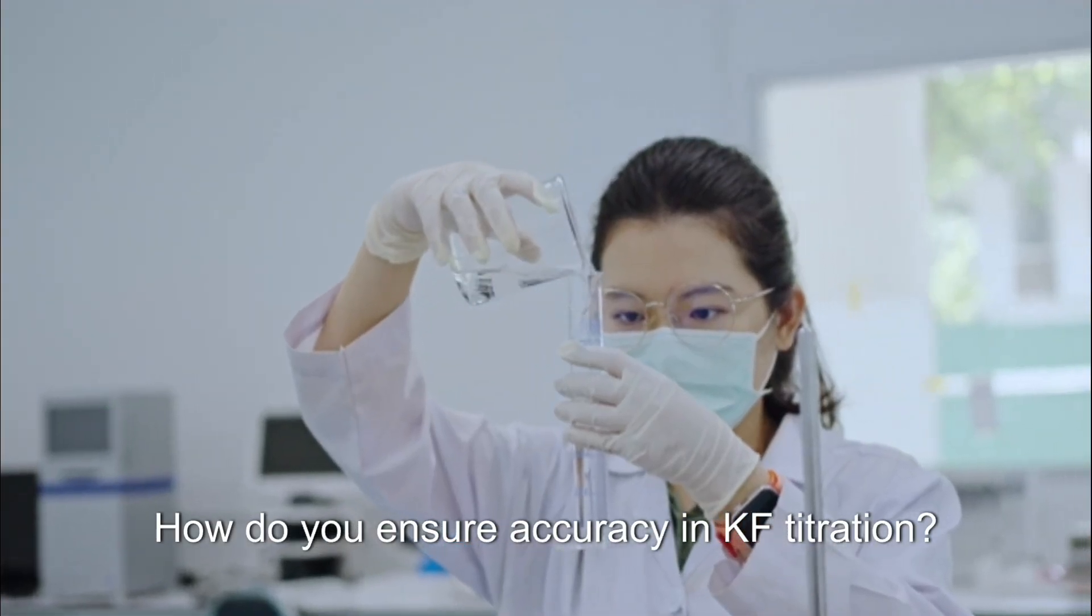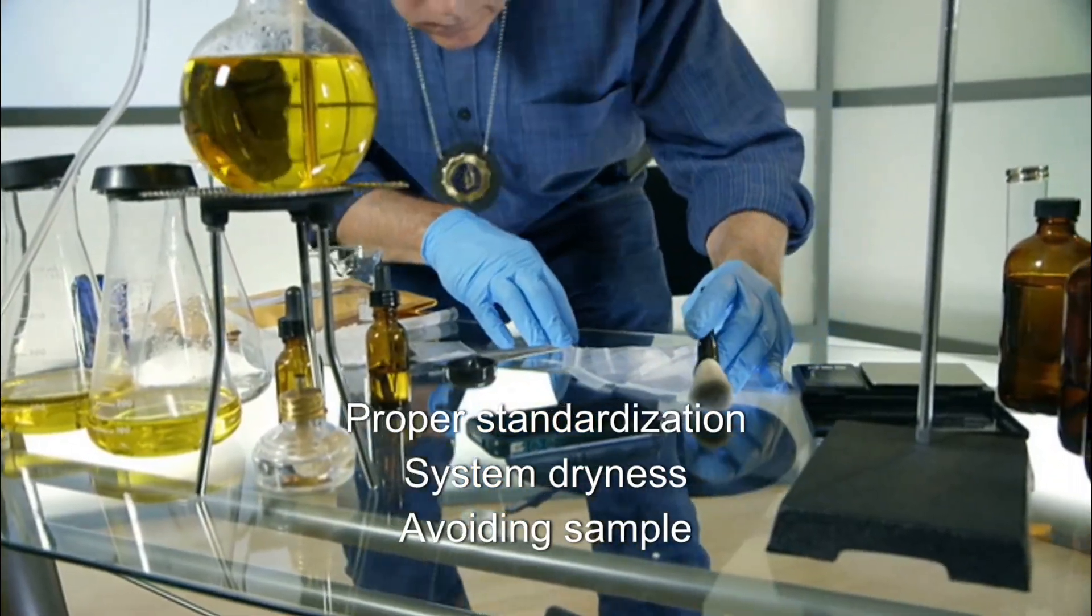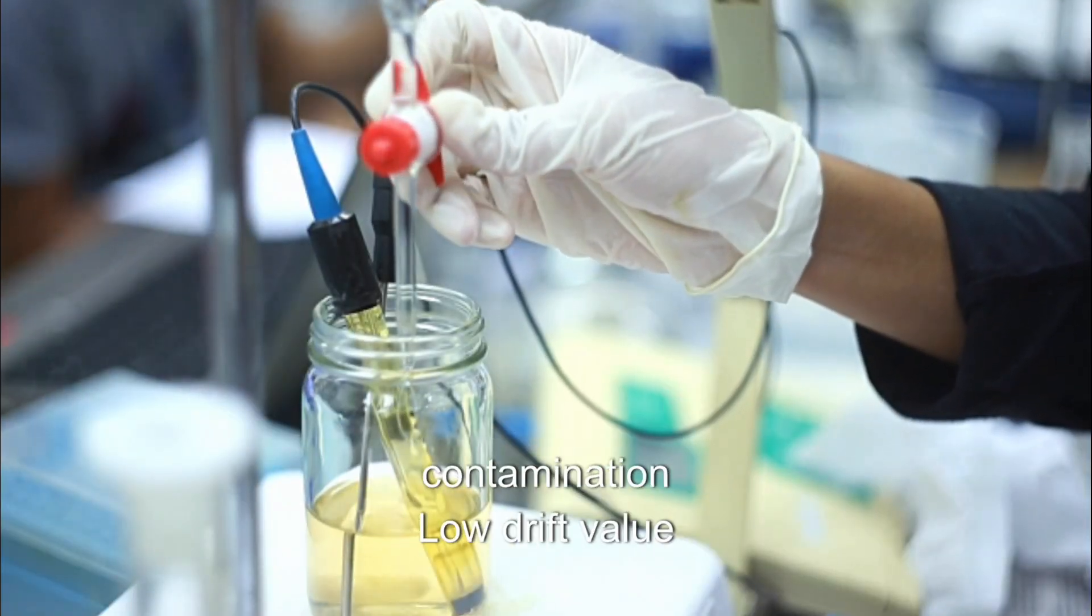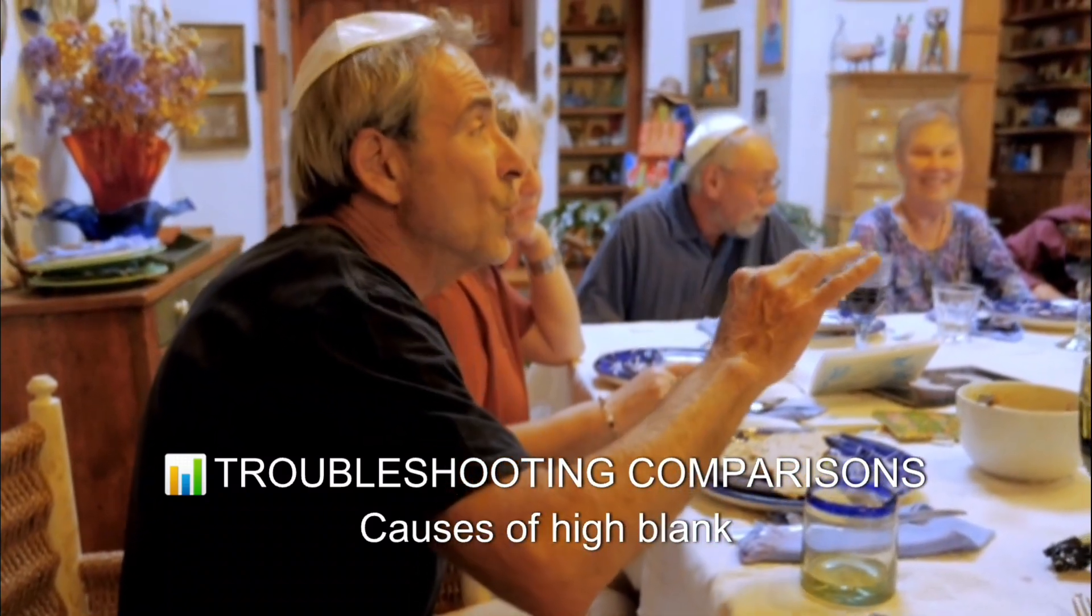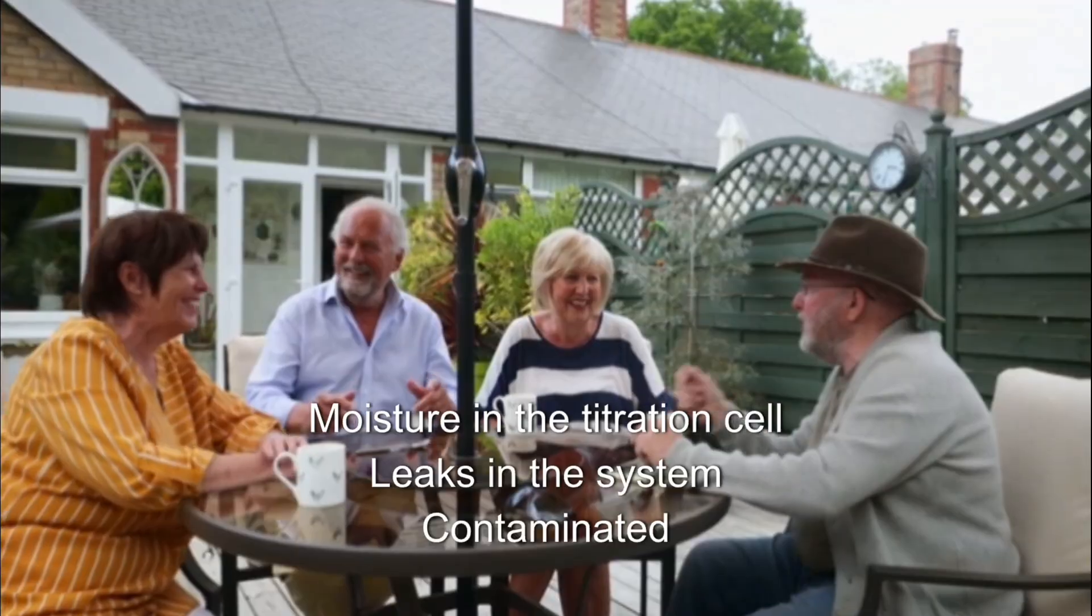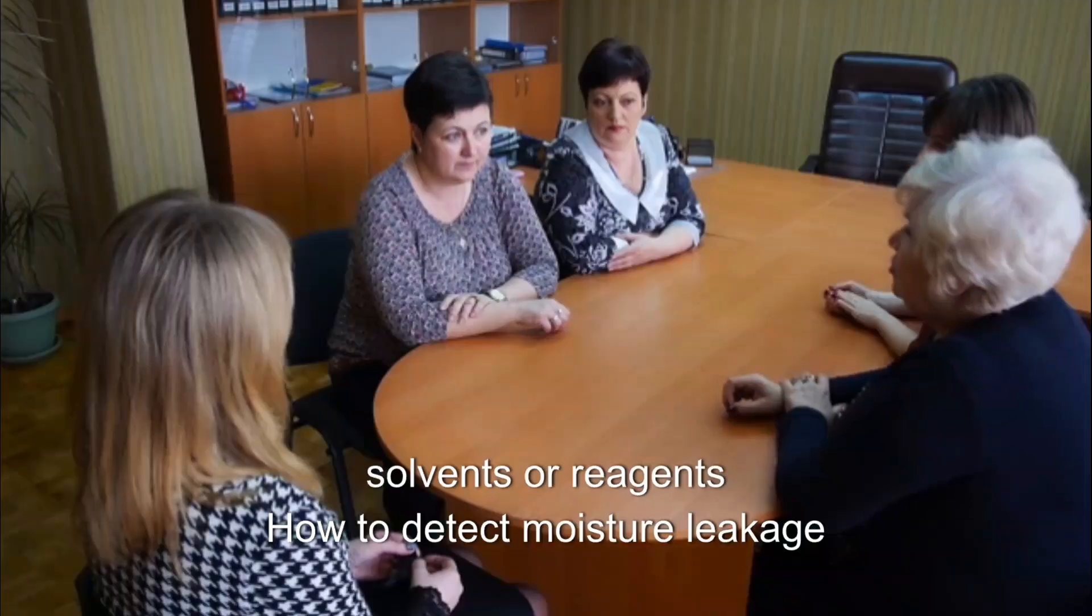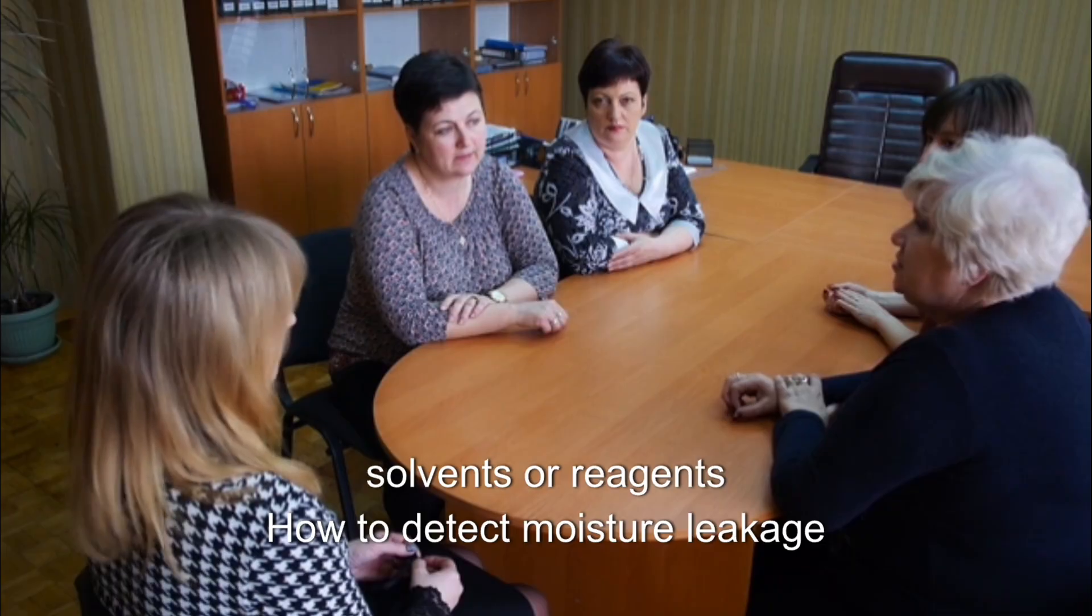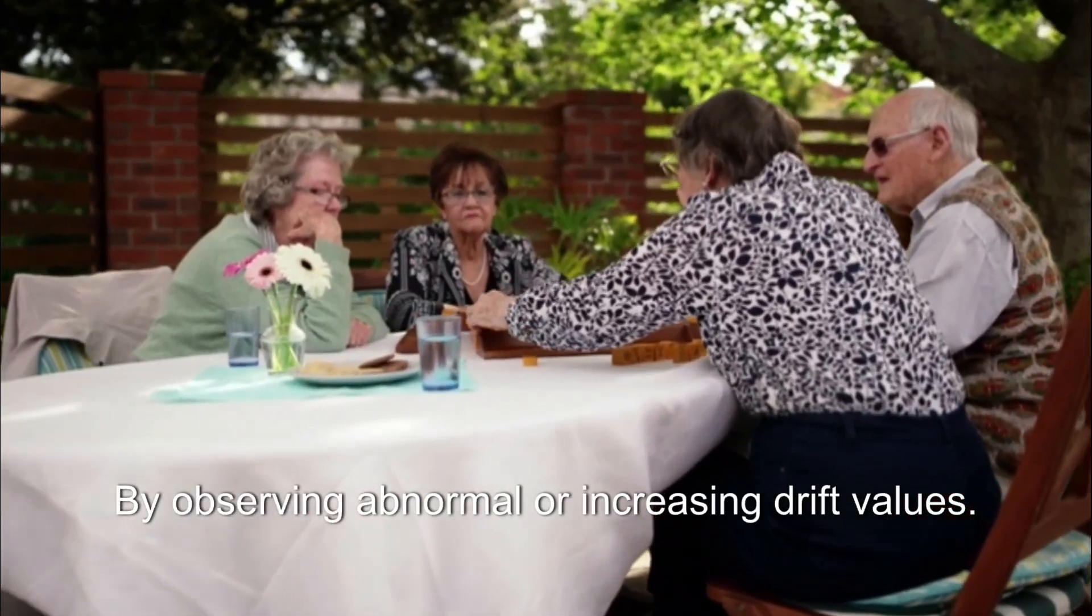How do you ensure accuracy in KF titration? Proper standardization, system dryness, avoiding sample contamination, low drift value. Causes of high blank values: moisture in the titration cell, leaks in the system, contaminated solvents or reagents. How to detect moisture leakage in the system? By observing abnormal or increasing drift values.